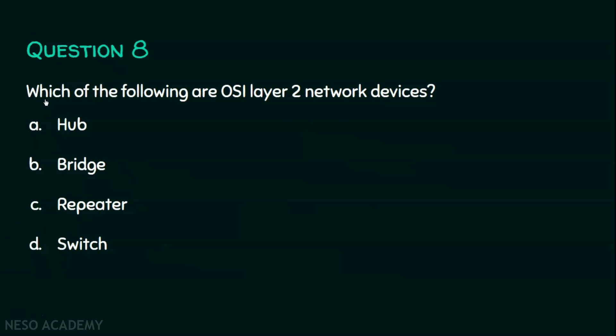Question number eight: which of the following are OSI layer two network devices? Option A: hub. Option B: bridge. Option C: repeater. Option D: switch. The answer is option B and D, because hub is a layer one device and repeater is also a layer one device, whereas bridge and switch are layer two devices.